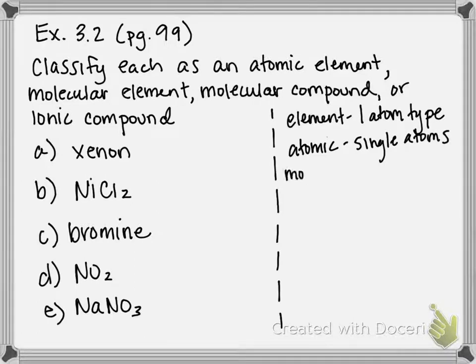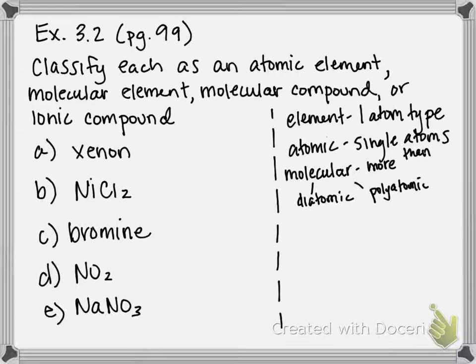Whereas molecular elements, even though they're only one type of atom, they exist as multiple atoms grouped together at once. So there's two types. There's the diatomic elements, and there's the polyatomic elements. So molecular elements are more than one atom.